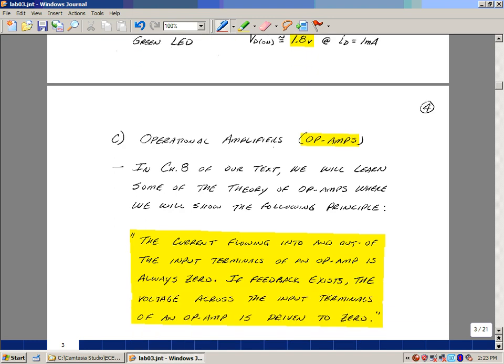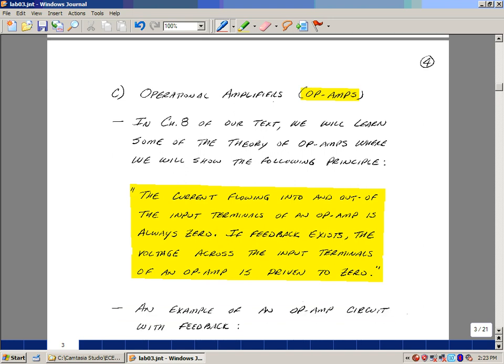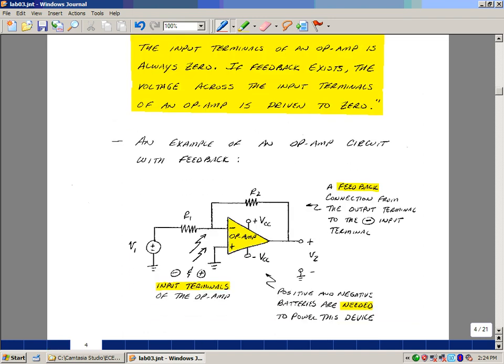In the course, too, we've talked about operational amplifiers, or just op-amps for short. And in Chapter 8, we had this following statement. The current flowing into the input and output terminals of an op-amp are always zero. If you have feedback in the amplifier, then the voltage across the input terminals is forced to take on a value of zero.